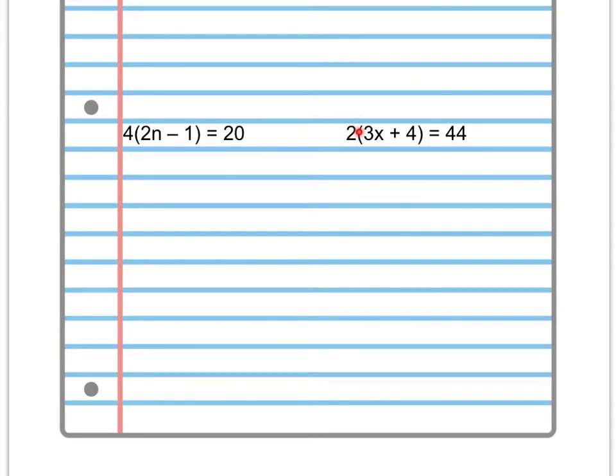That's 2 being multiplied by this quantity here of all these items that are being added. So since it's 2 times the quantity, we're going to multiply 2 times each of these items inside the quantity, come up with 2 new terms that are added together that still equal 44. So I'm going to do 2 times 3x. Bring down the plus sign and then do 2 times 4. That's equal to 44 still.